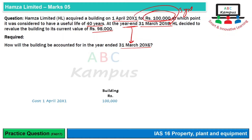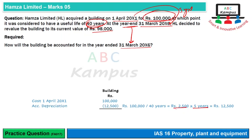1st April 20X1 par humari 100,000 ki building thi. Ab iski depreciation charge karte hain to 40 years ke hisaab se depreciation charge karni hai, aur 5 years guzar chuke hain. To 5 years ki depreciation hamare paas aa jaati hai 12,500. Aur depreciation ko less karne ke baad hamare paas 31st March 2006 ko before revaluation jo amount hai wo hai 87,500.